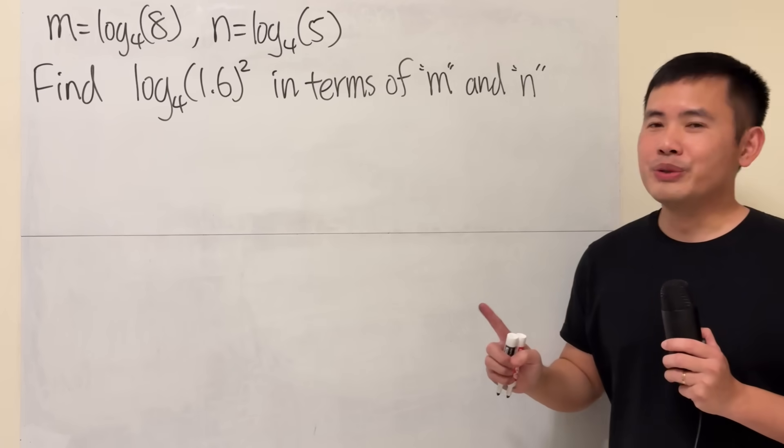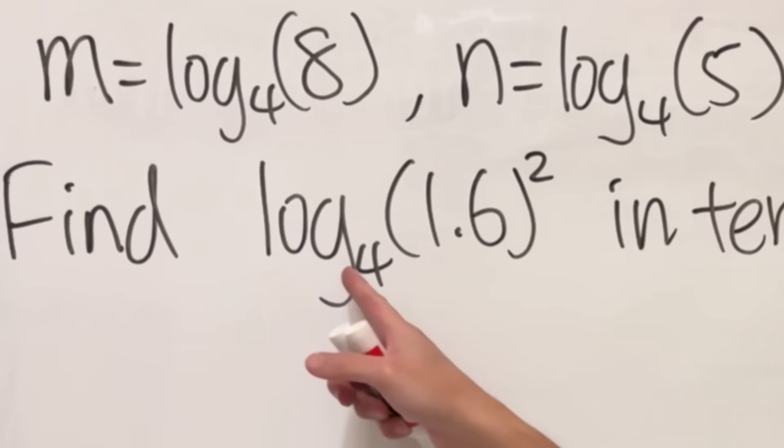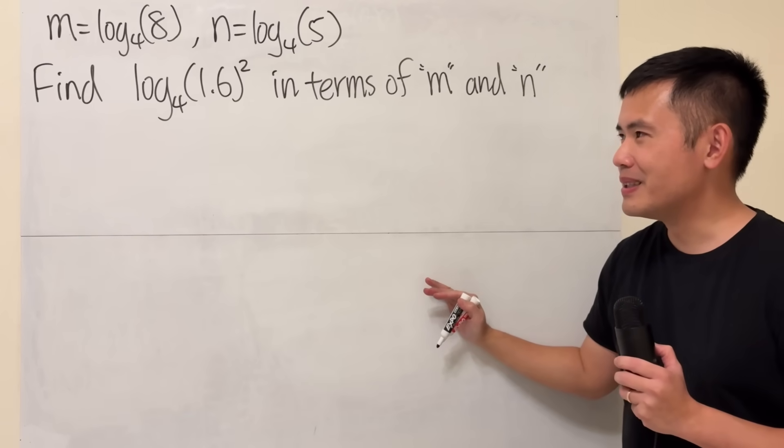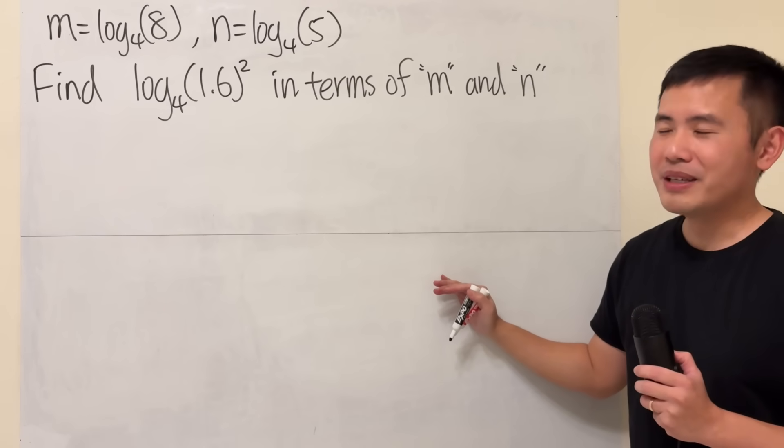So the big issue is this right here: log base 4 of 1.6 squared. I personally just didn't like this at all because it's just ambiguous.